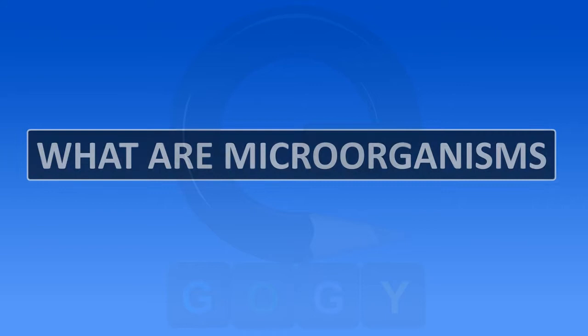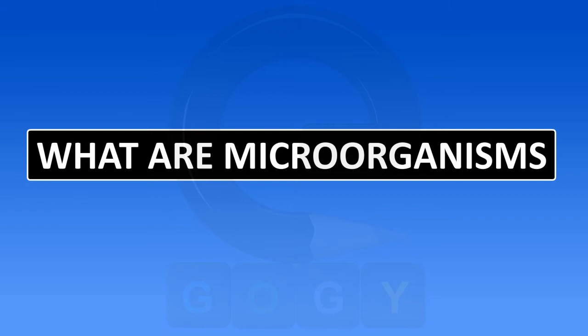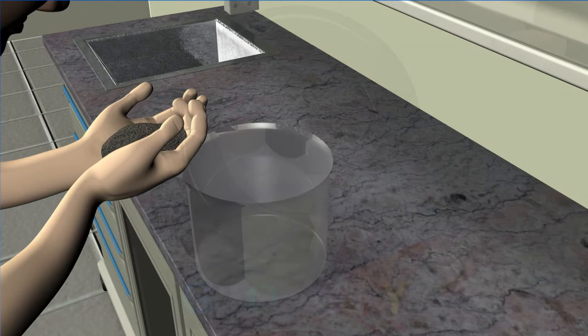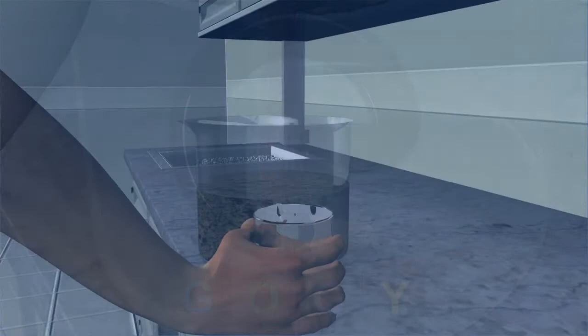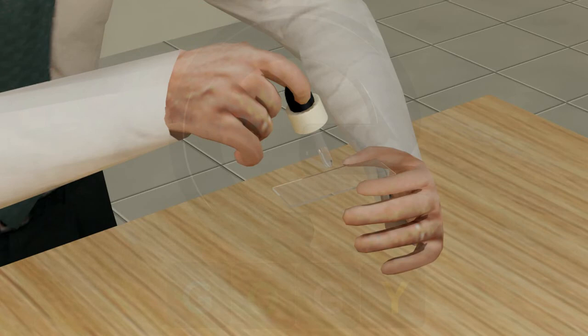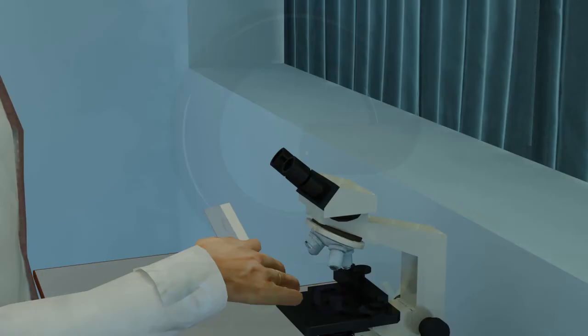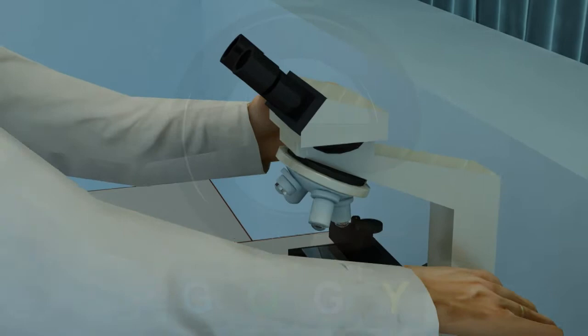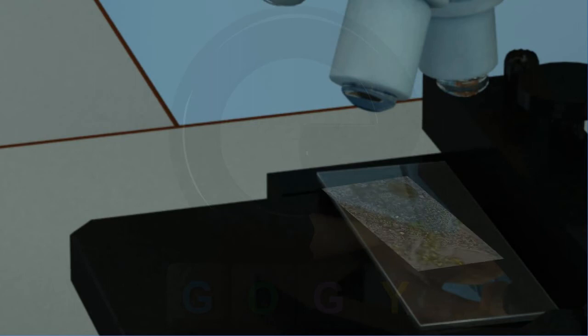What are microorganisms? Collect some moist soil from the field in a beaker and add water to it. After soil particles have settled, take a drop of water from the beaker and observe under a microscope. What do you see? There are small organisms in this soil. These are microorganisms and are not visible to the naked eye.